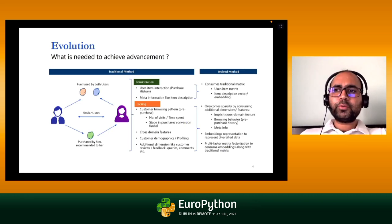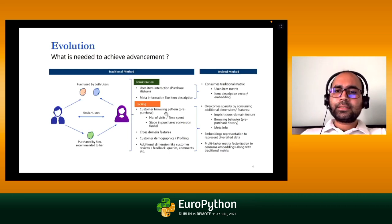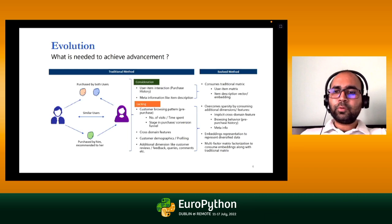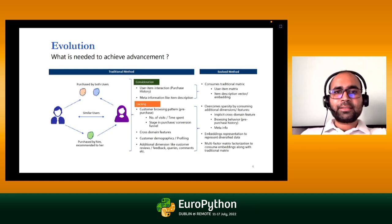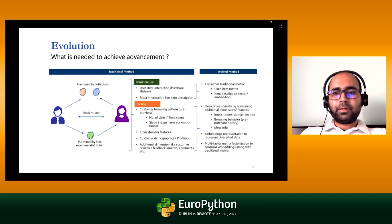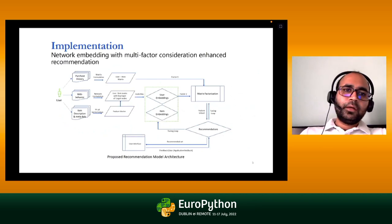That's where network embeddings — the core part of this recommendation system — come into the picture. In a nutshell, we utilize all this information beyond user-item interaction by converting it into a representation usable by matrix factorization. Using that information, we also try to overcome the sparsity problem normally faced in recommendation scenarios. That is exactly the word 'evolution' — going from the traditional way to the advanced approach.